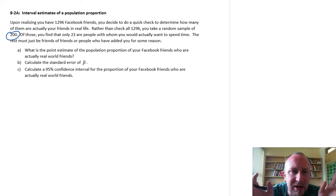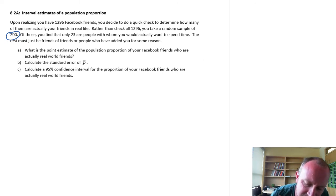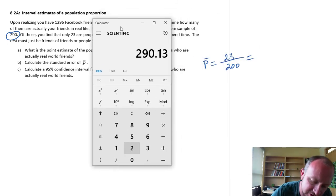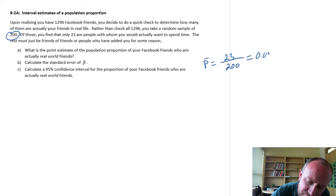So what is the point estimate of the population proportion of your Facebook friends who are your real-world friends? Well, this is a relatively straightforward calculation, so here I'm just looking at the ratio. Now of those 200 people that I've sampled, 23 of them are my real, real-world friends, outside of Facebook friends. And so that's all we need for our sample proportion. So this is just simply 23 divided by 200, so 11.5, so 0.115. So 11 and a half percent of my sample are my real-world friends.